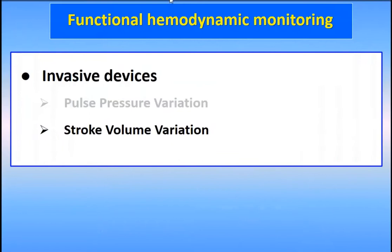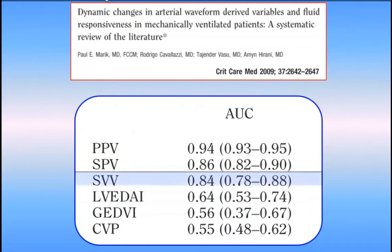We can do the same with stroke volume variation — SVV. Some devices are now able to provide SVV by analyzing the arterial pressure waveform. In a meta-analysis by Paul Marik and coworkers, SVV was demonstrated to be a good predictor of fluid responsiveness in ICU patients.